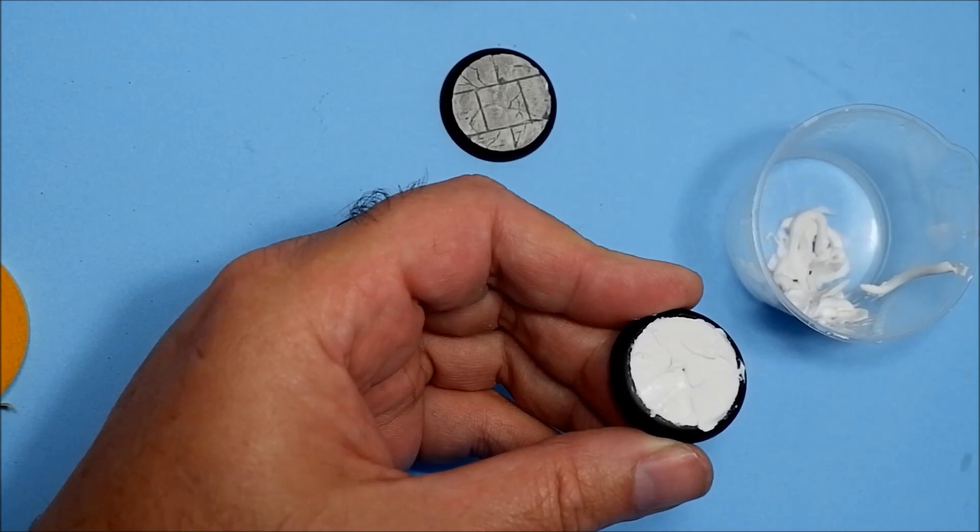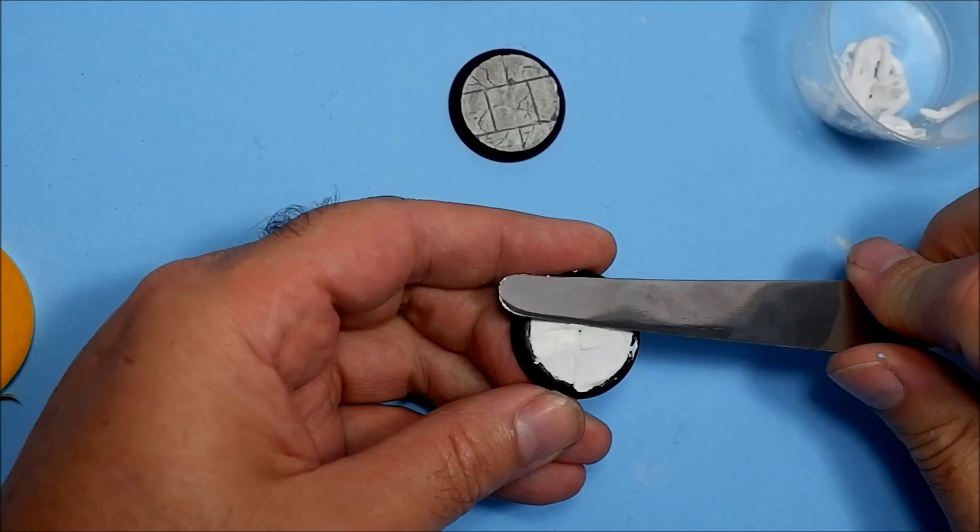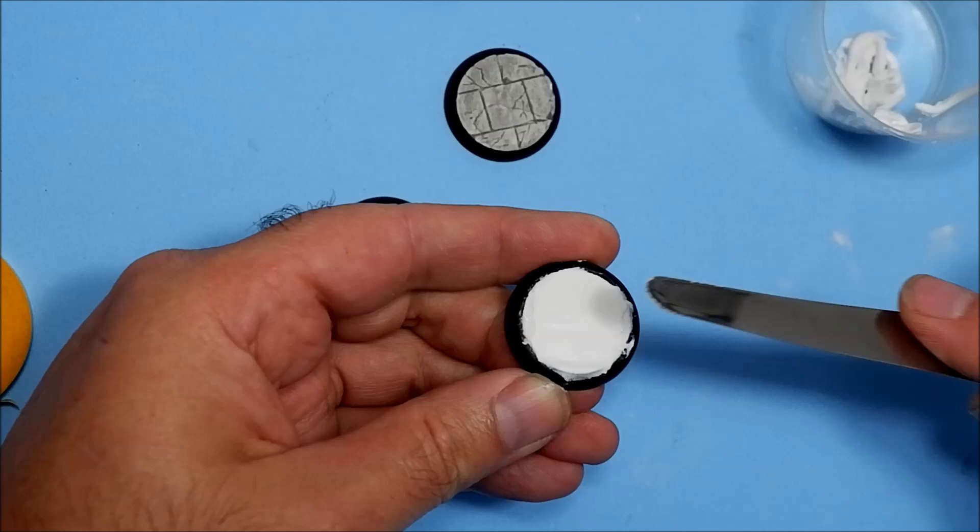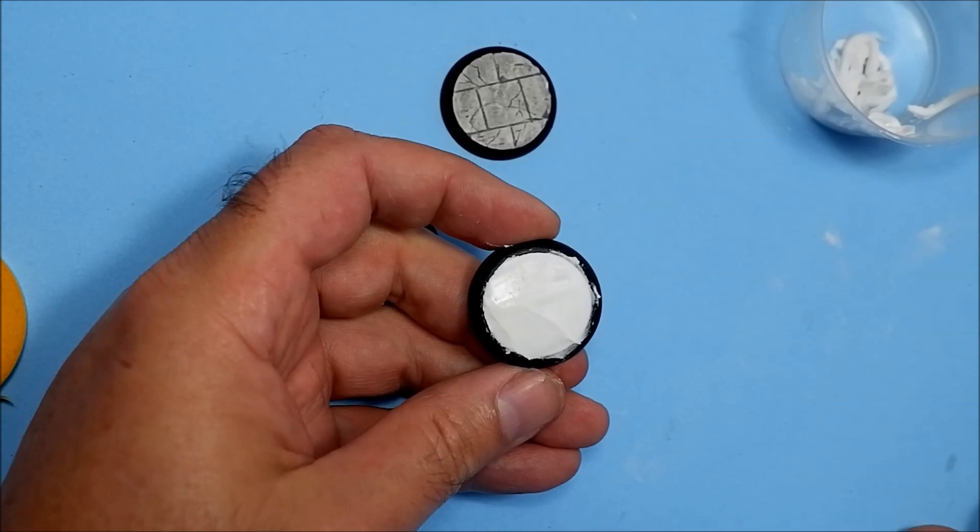So I've filled in the base. I'll wipe off the excess off the knife now so it's nice and clean, and I'll just scrape across the top to flatten it off. And we'll leave that to dry.